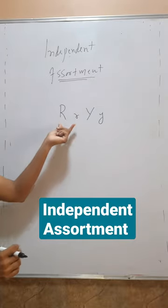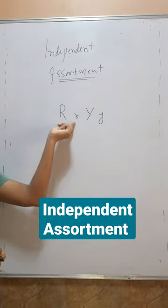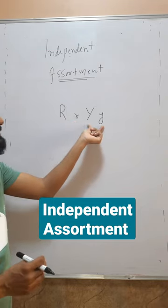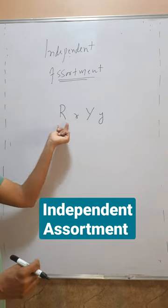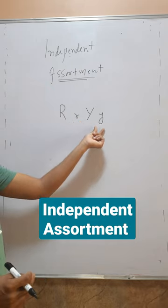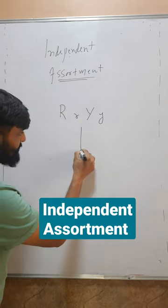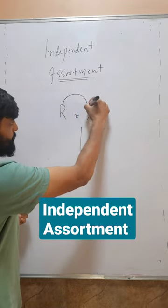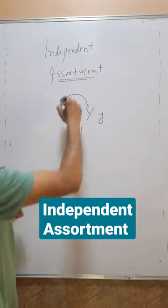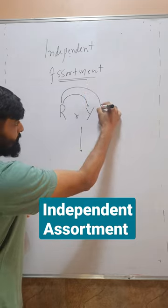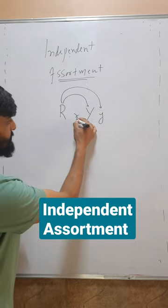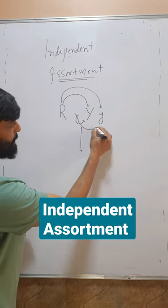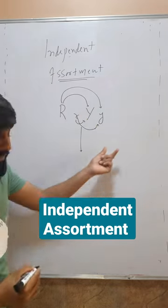Here I have two factors of a character called seed shape and two factors of a character called seed color — capital R, small r, capital Y, and small y. During gamete formation, capital R can form a gamete with capital Y, and capital R can also form a gamete with small y. Small r can form a gamete with capital Y, and small r can also form a gamete with small y.